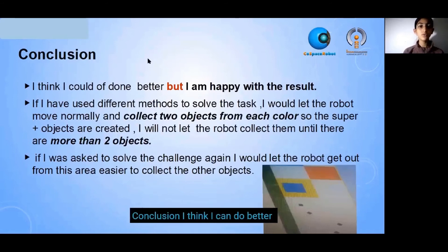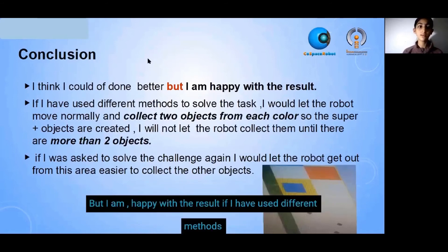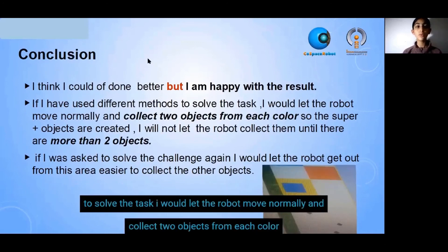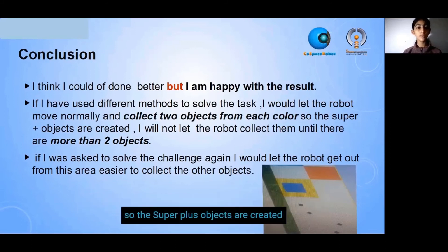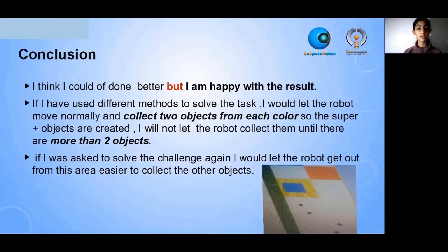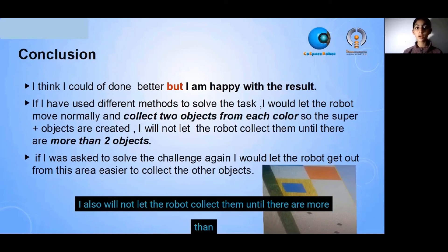Conclusion: I think I could have done better, but I'm happy with the result. If I have used different methods to set the task, I would let the robot move normally and collect two objects from each color, so the super plus object is created. I would let the robot collect them until there are more than two objects.